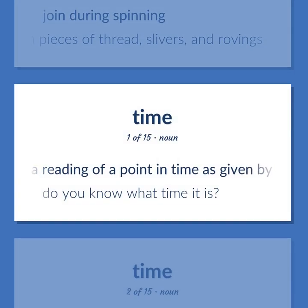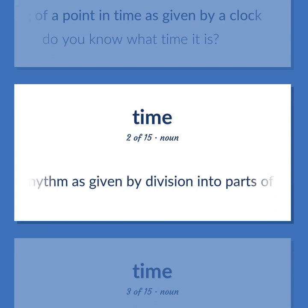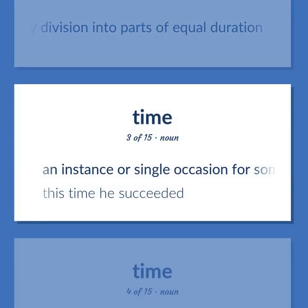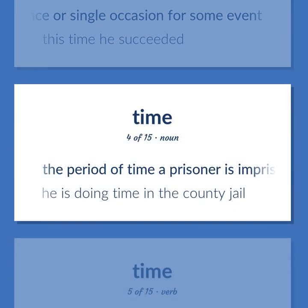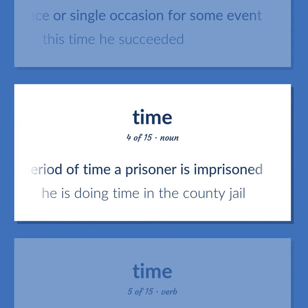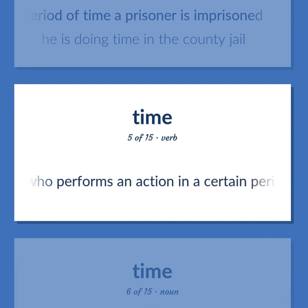Time: A reading of a point in time as given by a clock. Do you know what time it is? Rhythm as given by division into parts of equal duration. An instance or single occasion for some event. This time he succeeded. The period of time a prisoner is imprisoned. He is doing time in the county jail. Measure the time or duration of an event or action or the person who performs an action in a certain period of time.